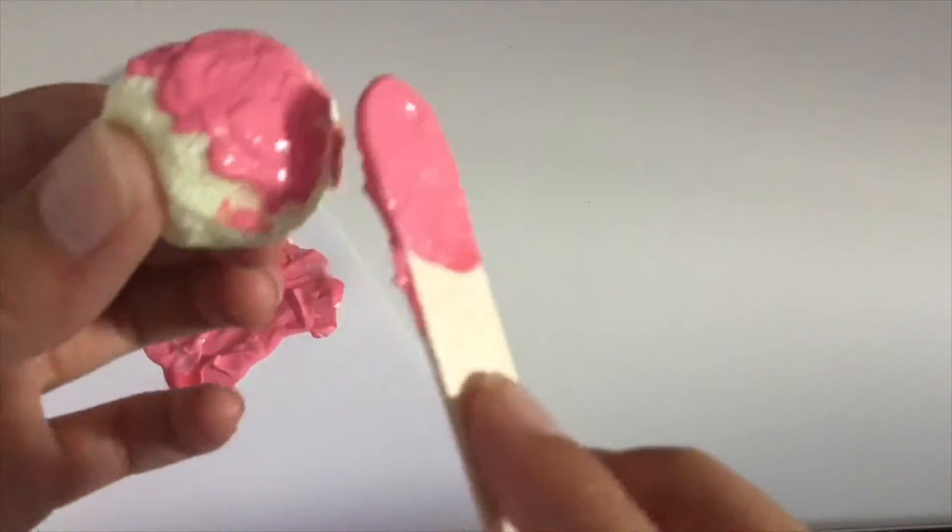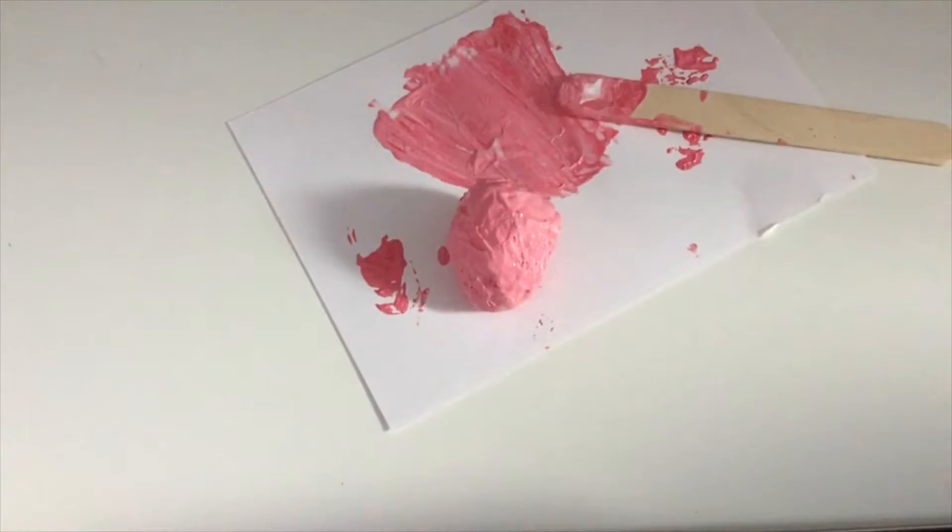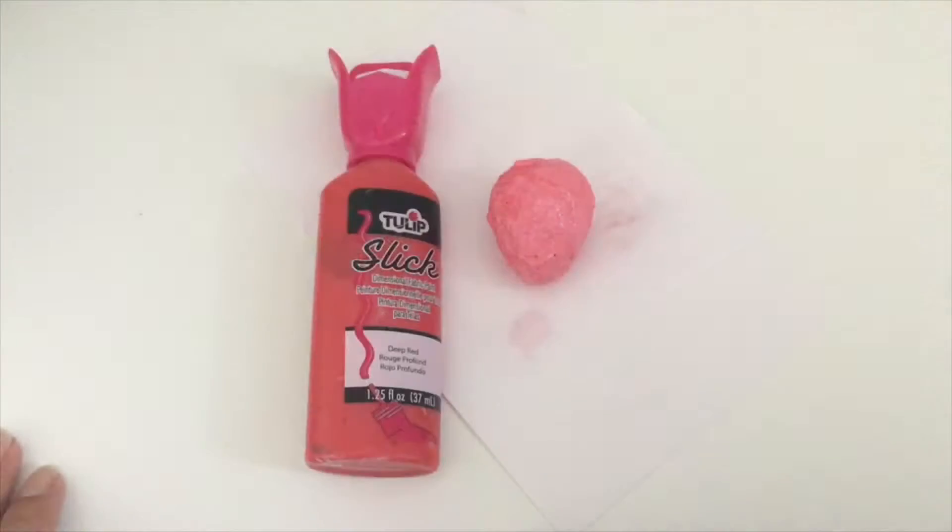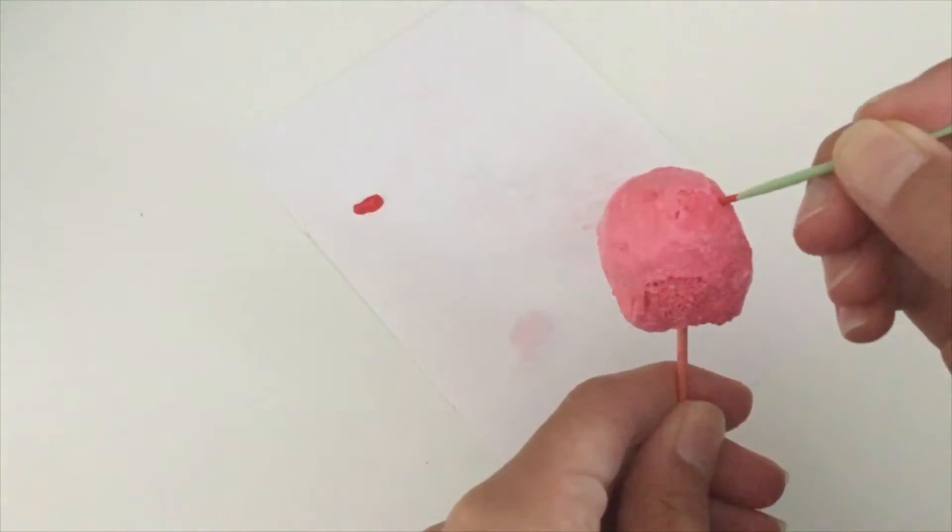Then I just started applying it with a popsicle stick. I'm doing a pretty thick layer. You can do very thin layers. Mine turned out like this. Once it dries it smooths out as you can see.